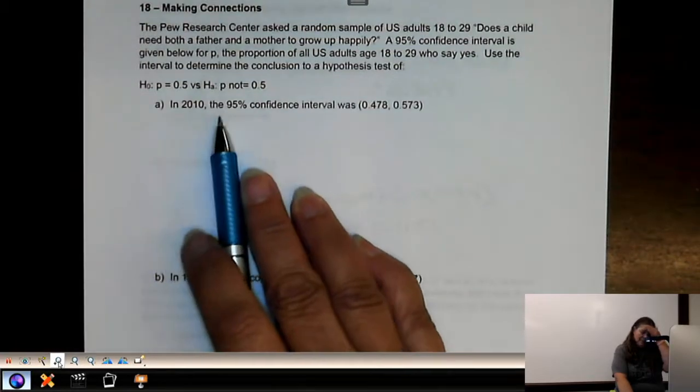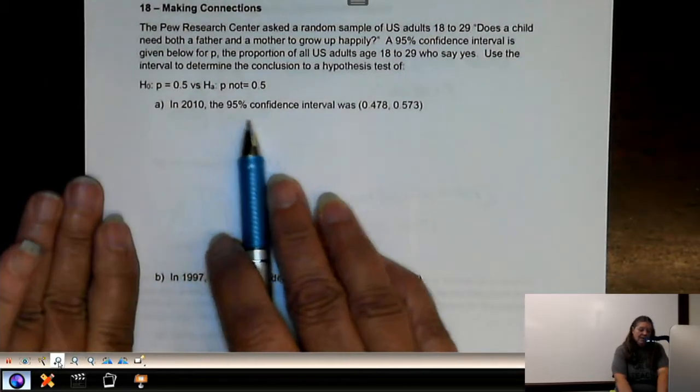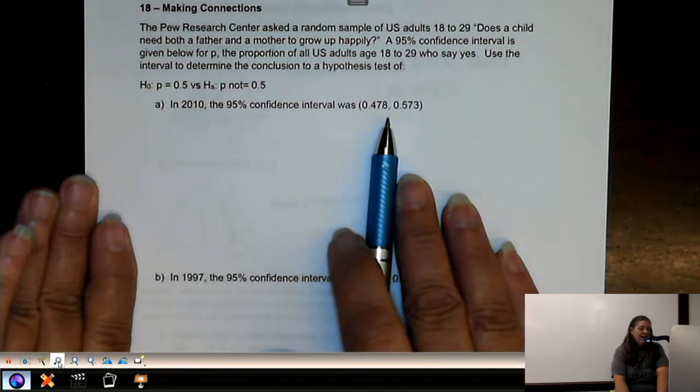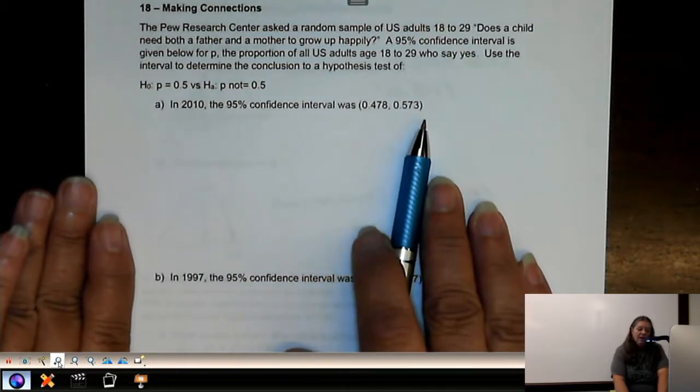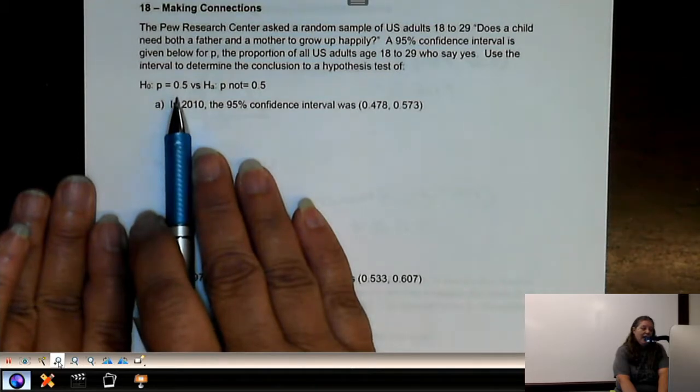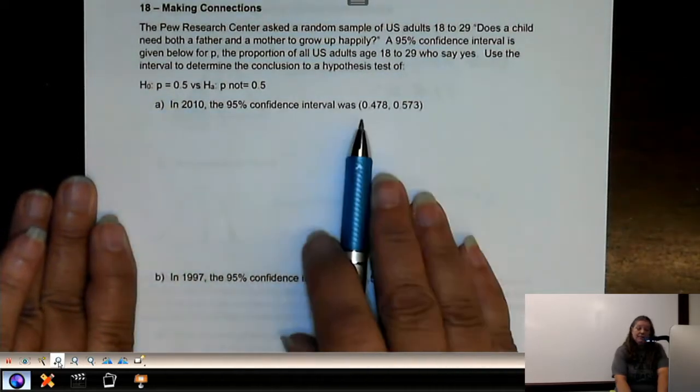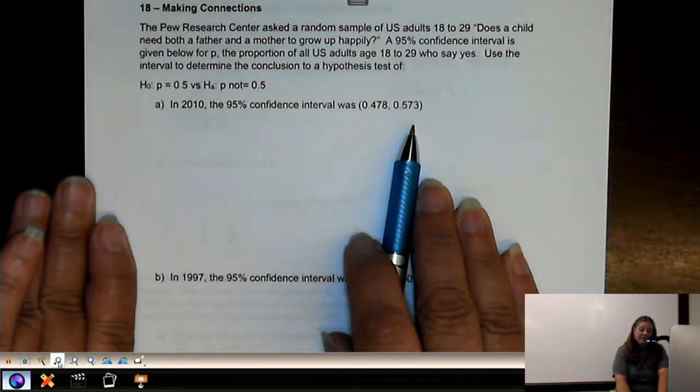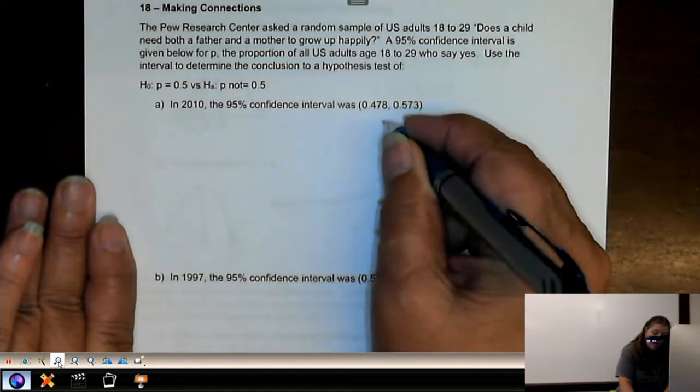So in 2010, the 95% confidence interval was 0.478 to 0.573. What we're doing is looking to see if the value from the null hypothesis is between the two limits of the confidence interval. And if we look at it,